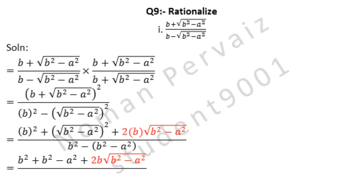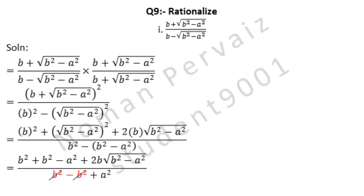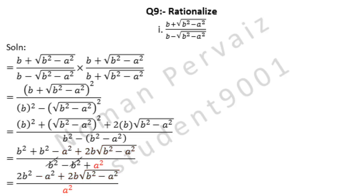Divided by B squared comes as it is. B squared has no sign so it is positive, minus plus is minus, and B squared is written with it. B squared is cancelled with minus B squared. Is equal to: B squared plus B squared becomes 2B squared, minus A squared plus 2B into under root B squared minus A squared is written as it is, divided by A squared is also written as it is. Hence this is the answer of part 1.